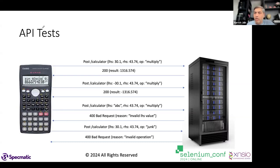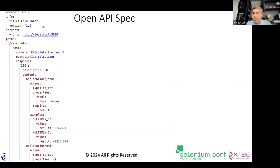Coming back to: what is a contract? There is a specific agreement between the consumer and provider of a service in terms of data types, schema, API signatures, and possible response codes. That agreed-upon specification is the API contract. One very popular format for capturing this is the OpenAPI specification — formerly known as Swagger, which many of you will be familiar with.